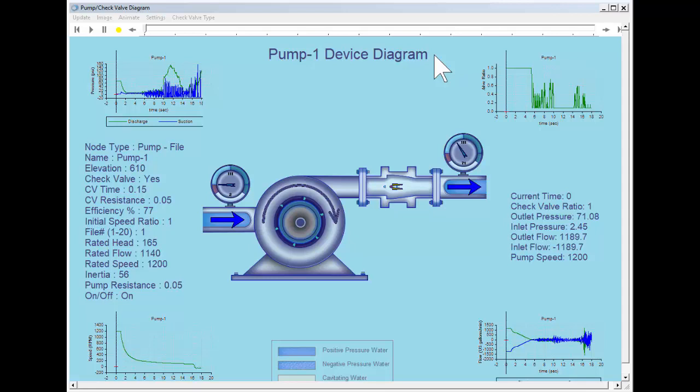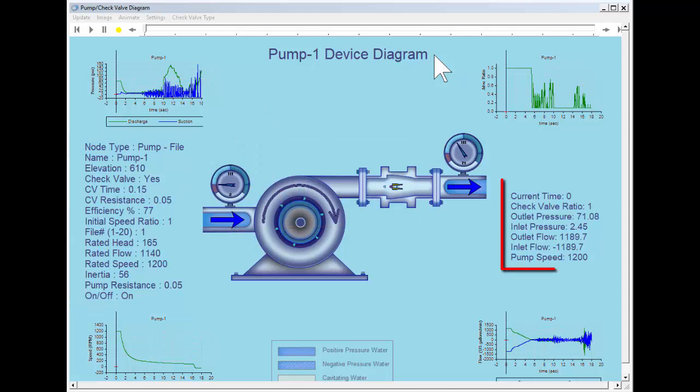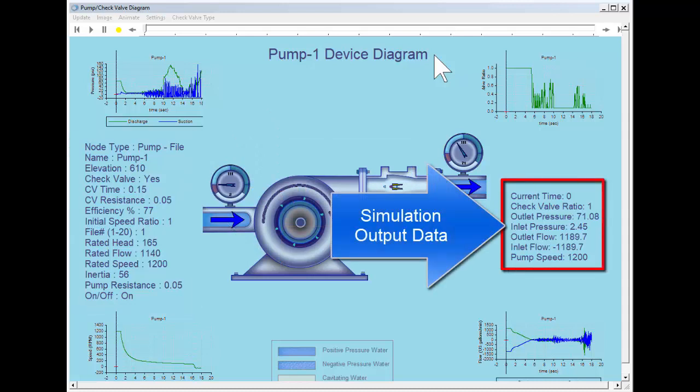The Check Valve Animation window shows user input data on the left and simulation output data in a dashboard-like area on the right.